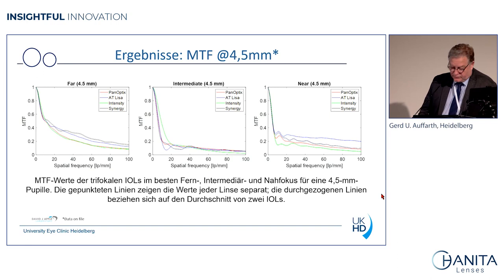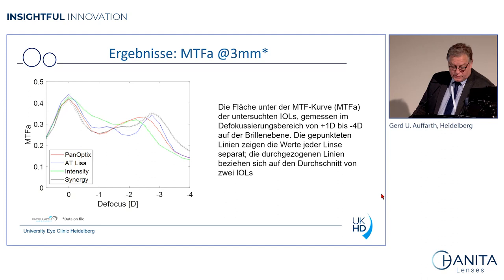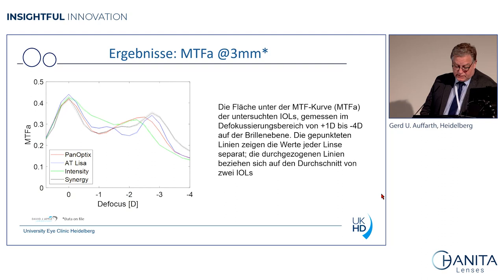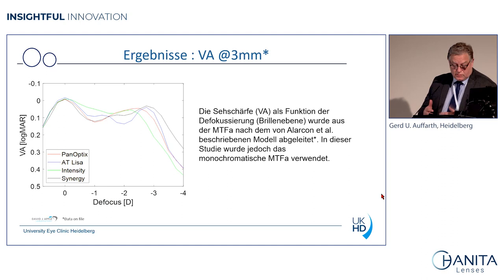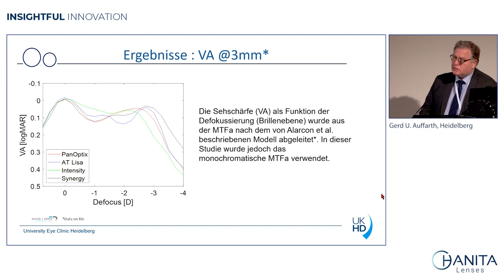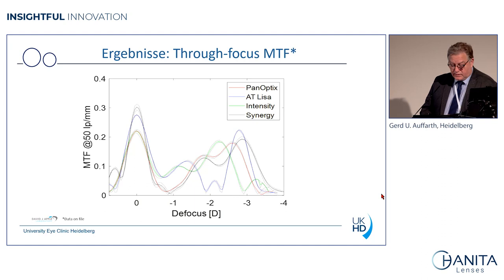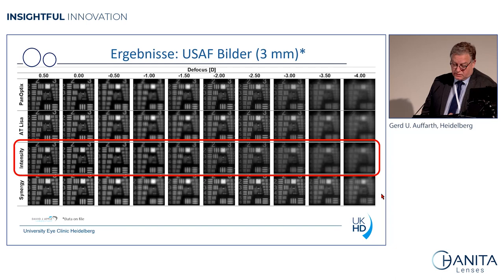With a larger pupil there is a little more light distribution. We can also correlate MTF with defocus: looking at the minus-1 D range, roughly minus 0.75 to minus 1.25, the green line representing the Intensity is way above the other lenses. Between minus 2 and minus 3 diopters they are all the same. Correlating defocus with simulated visual acuity confirms the same superiority of the Intensity in that specific intermediate area. In the through-focus MTF you can also see that some lenses behave more bifocally and some more trifocally, while the Intensity is very similar to the others overall.